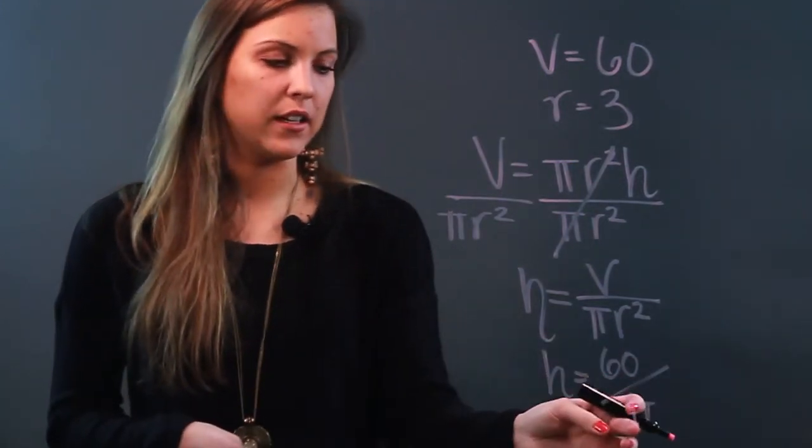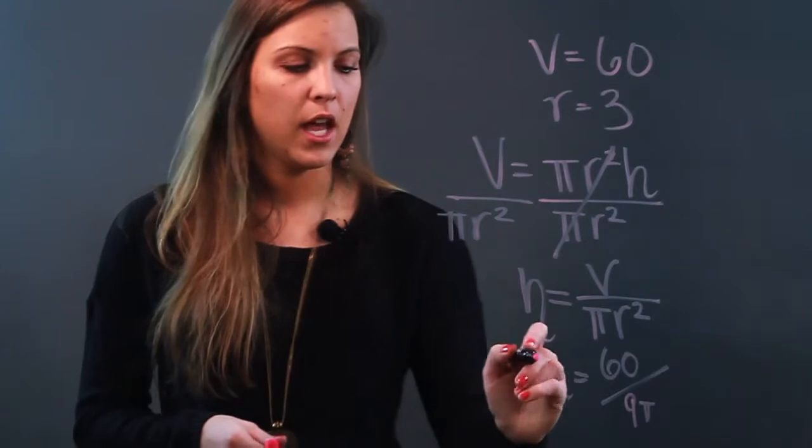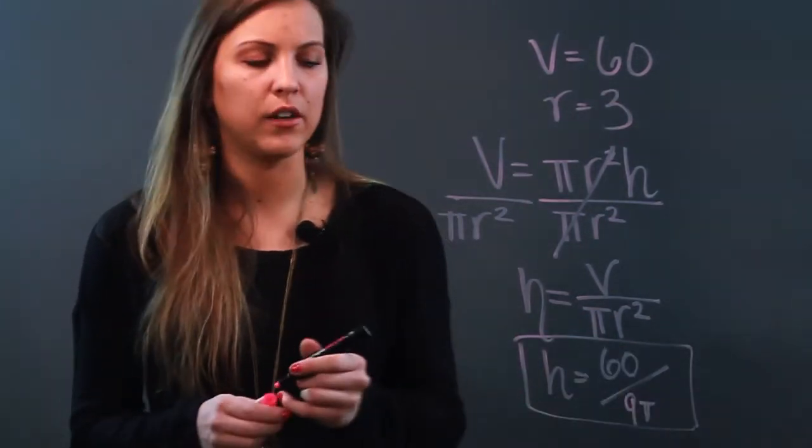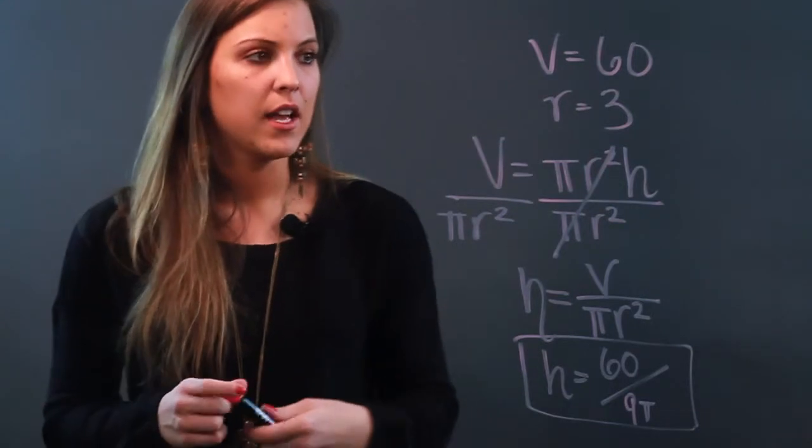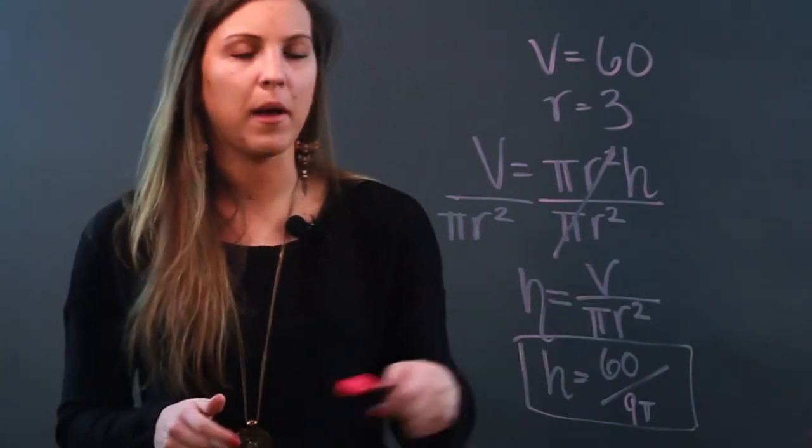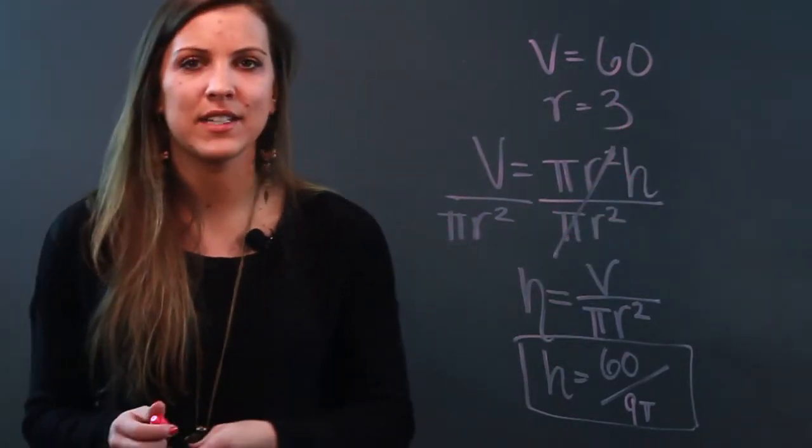If I wanted to estimate, I could say 9 times 3 is 27 and divide that into 60. But we'll leave it like this so you can have an exact answer, though you can put that in your calculator for a more precise estimate. So we isolate the variable h and end up with h equals volume over pi r squared. If you're given the volume and the radius, that's how you find the height of a cylinder.